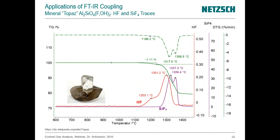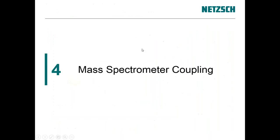FTIR coupling is not only for the organic or polymeric field. In a second example — mineral topaz, an aluminosilicate system with fluorine and hydroxide group impurities — we show the high temperature region. A mass loss step is visible, which you would not normally expect if you didn't know fluorine was present. With FTIR, you can distinctly detect traces of hydrogen fluoride or silicon fluoride, confirming that the high temperature mass loss refers only to fluorine release rather than oxidation or reduction processes inside the material.